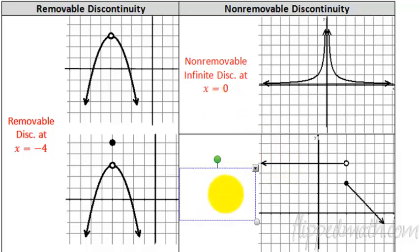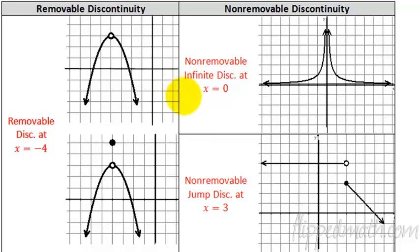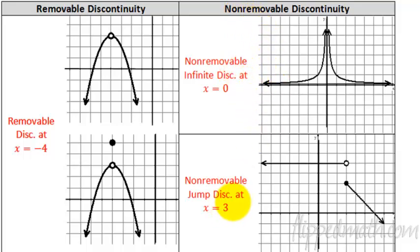Now this one down here is a non-removable jump discontinuity. It's called a jump because we're going along on this line and then we jump down, and then it keeps going. It happens at x equals 3. In your practice, you'll be identifying: is it removable or non-removable? And if it is non-removable, go a step further — is it an infinite discontinuity or a jump discontinuity? We're not going to deal with oscillations today, just these two types of non-removable discontinuities.